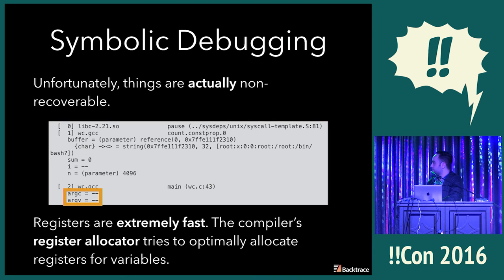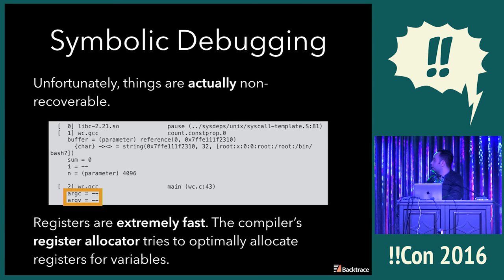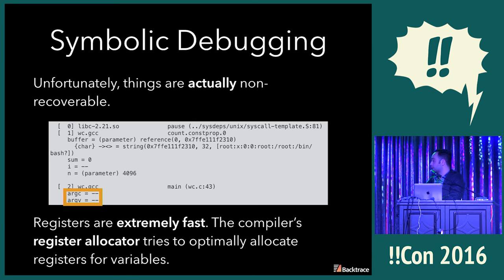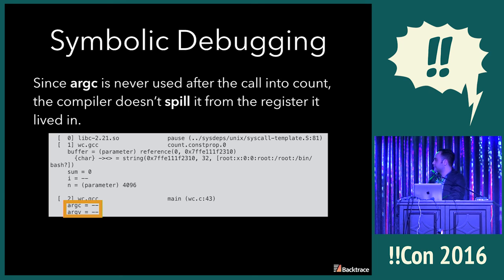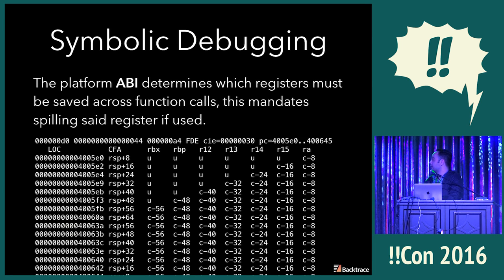The count function is called by main, and we see that argc and argv — the first two arguments passed to main — are completely optimized out. The compiler tries to make the best use of the limited set of registers and avoid touching memory if it can. In this case the compiler knows that argc is never used after the call into count, so it doesn't bother dumping that value from a register into memory — it's just completely un-retrievable. These are situations where reversible debuggers are very useful. Ultimately the platform ABI determines which registers have to be saved or not saved across function call boundaries.